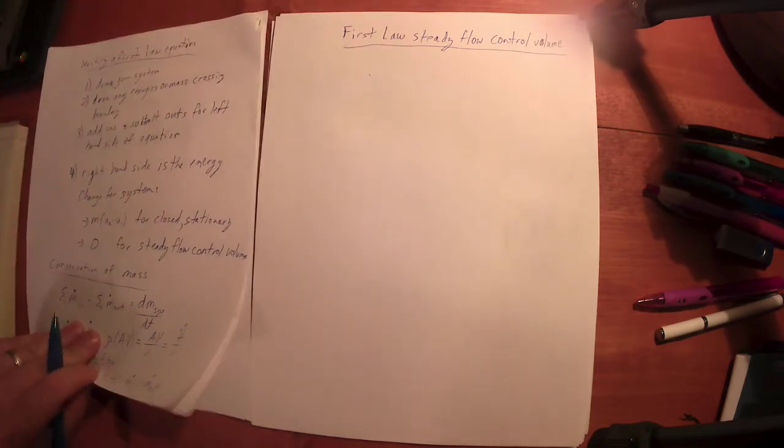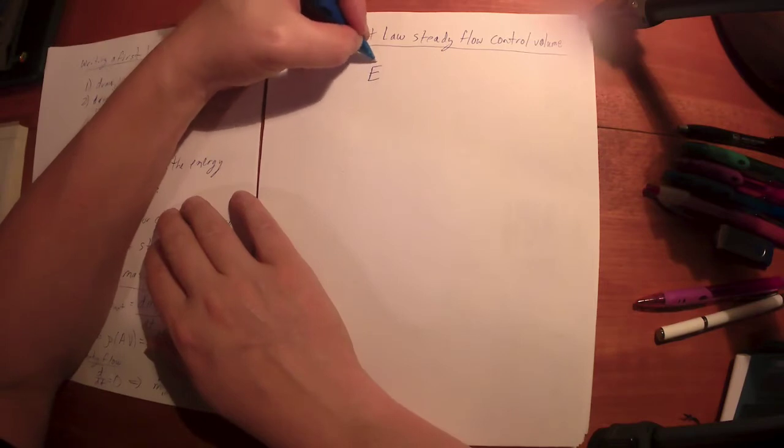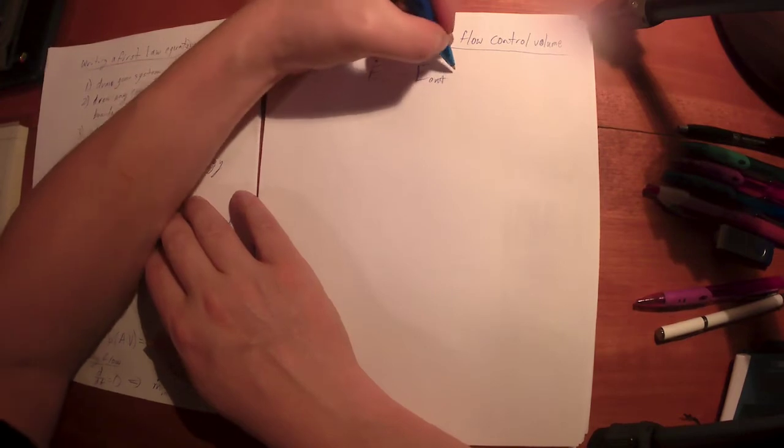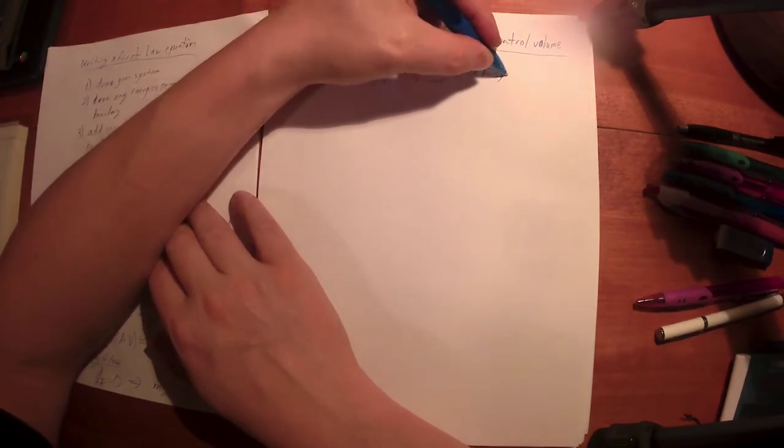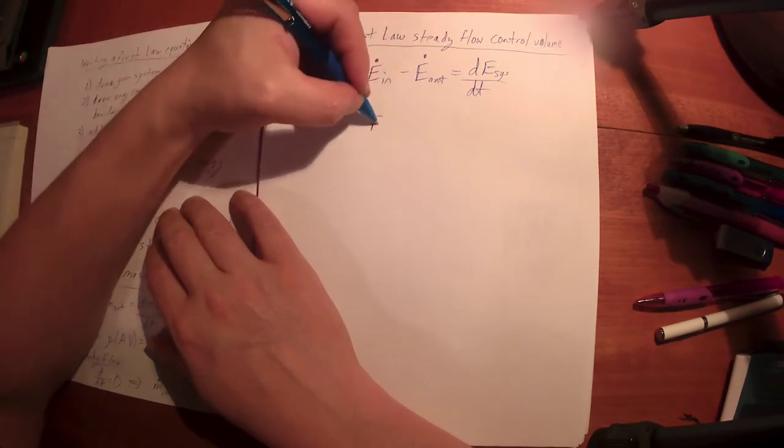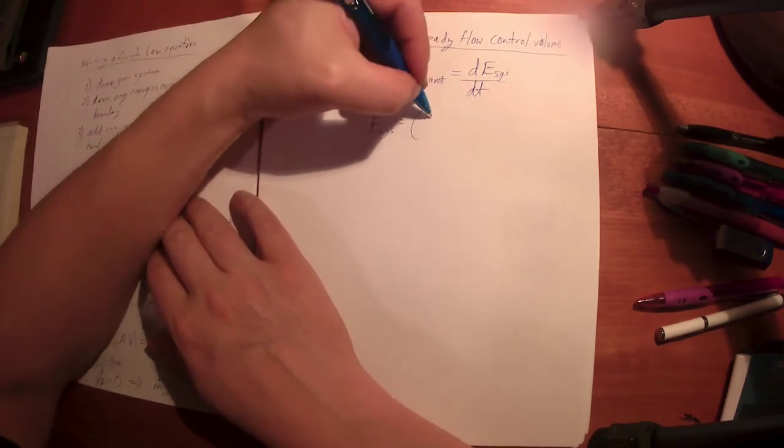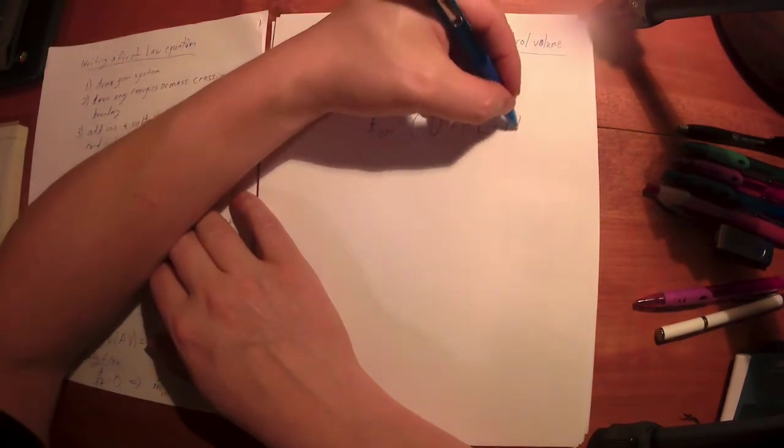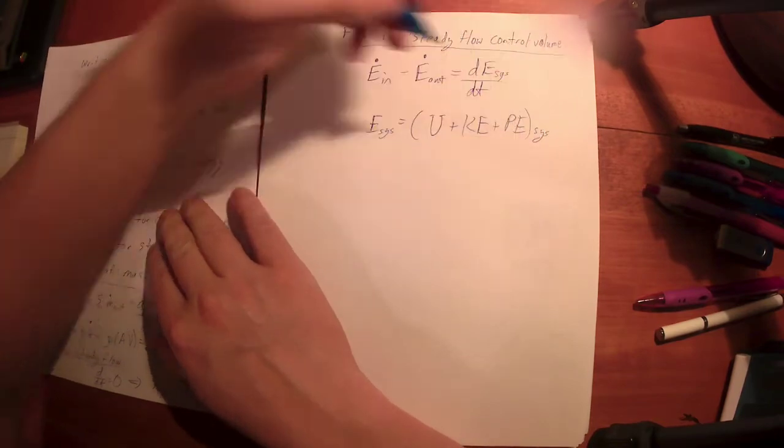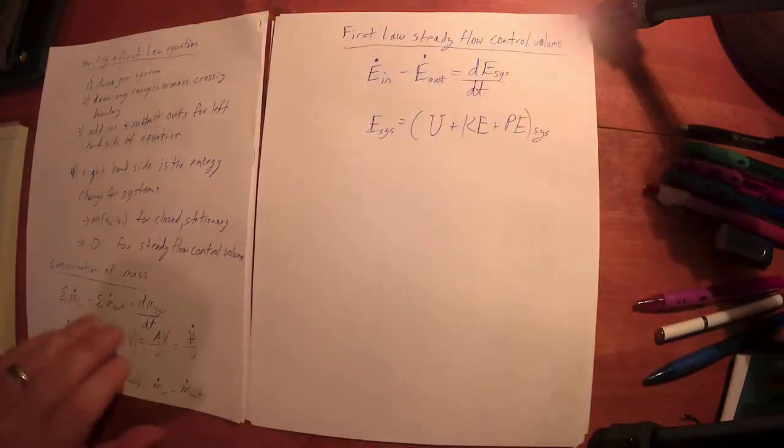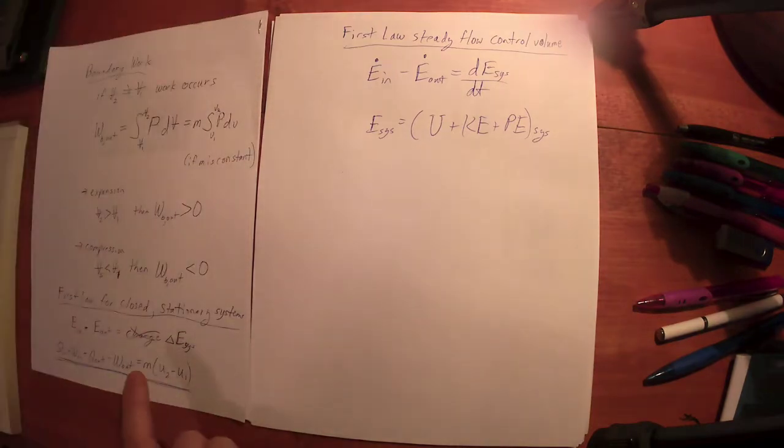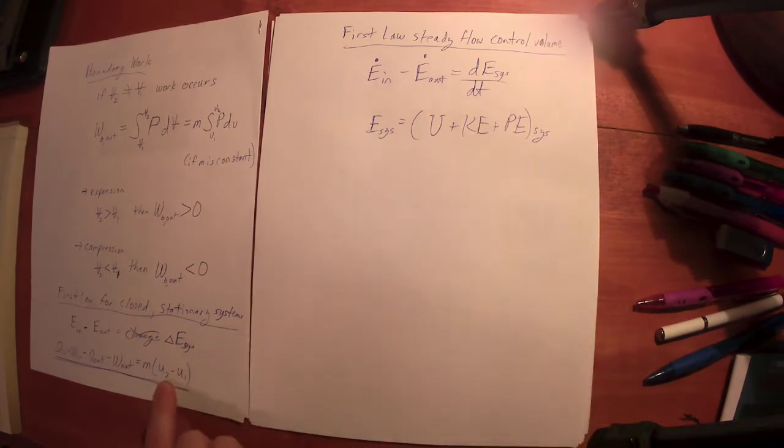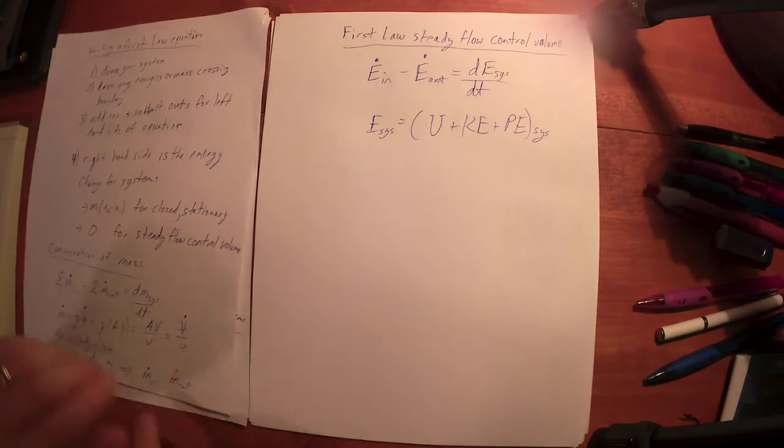Let's talk about first law for steady flow control volume. First law tells us, we'll just write the rate form: the rate of energy in minus the rate of energy out is equal to the change in the energy of the system with respect to time. The energy of the system represents the internal energy, the kinetic energy, and the potential energy of the system. In a closed stationary system, the kinetic energy and potential energy of the system doesn't change, so the only thing that changes is the internal energy of the system. This is for the entire system.